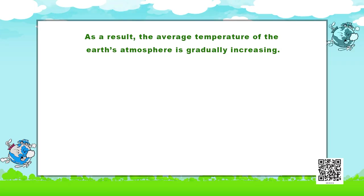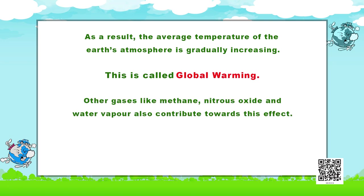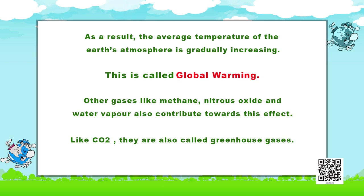CO2 traps heat and does not allow it to escape out. This increases the temperature on earth. As a result, the average temperature of earth's atmosphere is gradually increasing. This is called global warming. Other gases like methane, nitrous oxide and water vapour also contribute towards this effect. Like carbon dioxide, they are also called greenhouse gases. Because of the greenhouse effect, the earth's temperature is continuously rising as the heat is not escaping out to space — this is known as global warming.